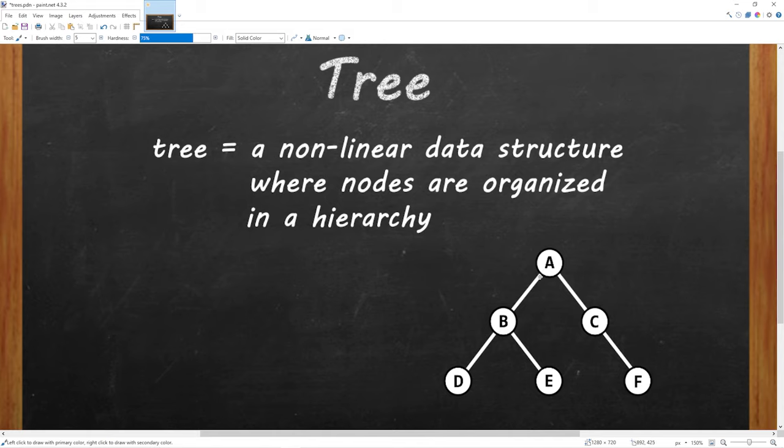A real-life example of a tree could be a family tree. Maybe we're at node D. That's us. B is a parent. E is your brother or sister. A is a grandparent. C could be an aunt or uncle. And F is your cousin.